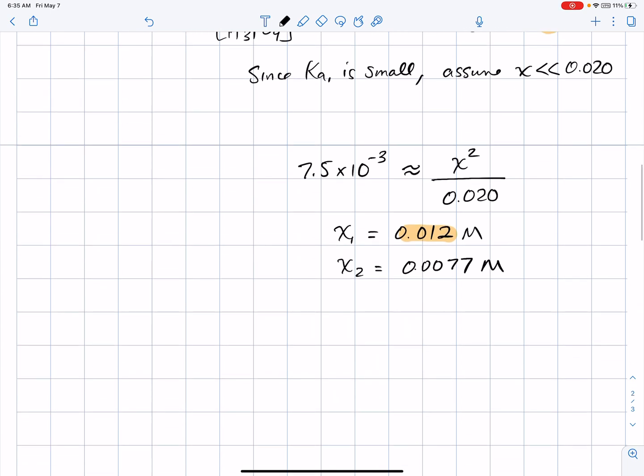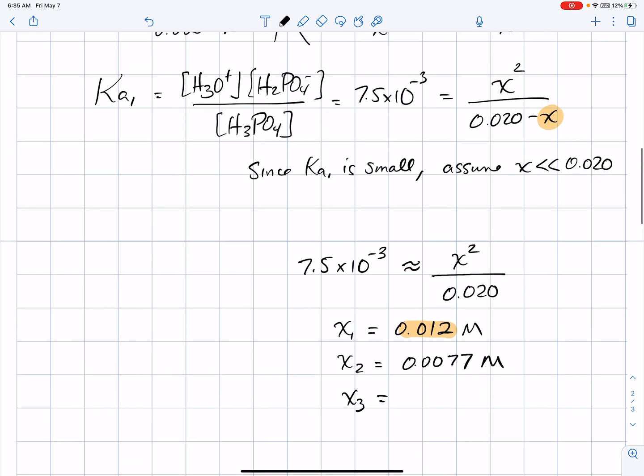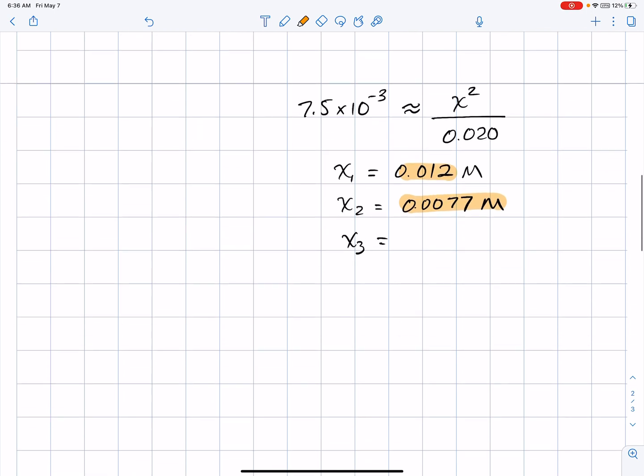All right, so the first approximation was too big. The second one is too small. Let's get a third approximation. We'll take the 0.0077 and put it back in the denominator and solve again. On the calculator, 0.02 minus 0.0077 times the Ka value, and then square root the answer. And this one's increased. So, now we're up to 0.0096 molarity. The first one was too big, the second one is too small, the third one is too big again.